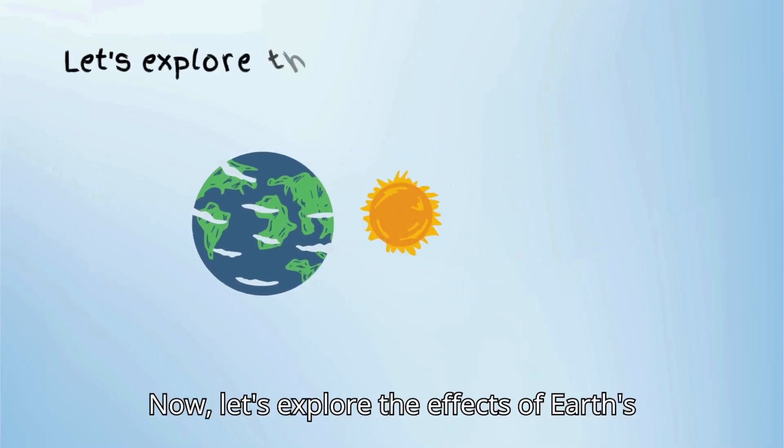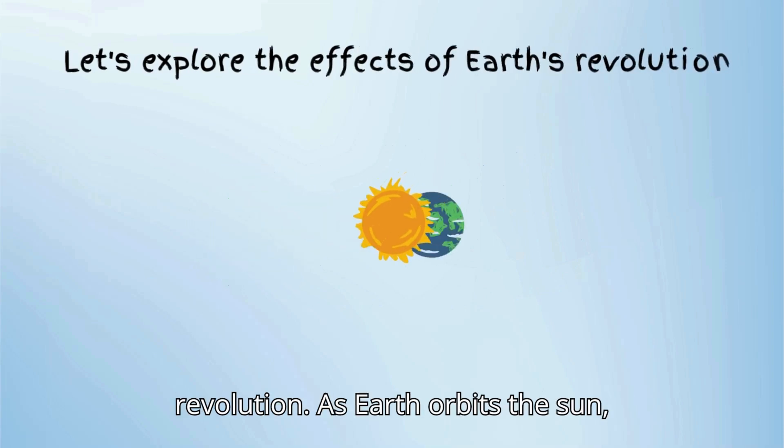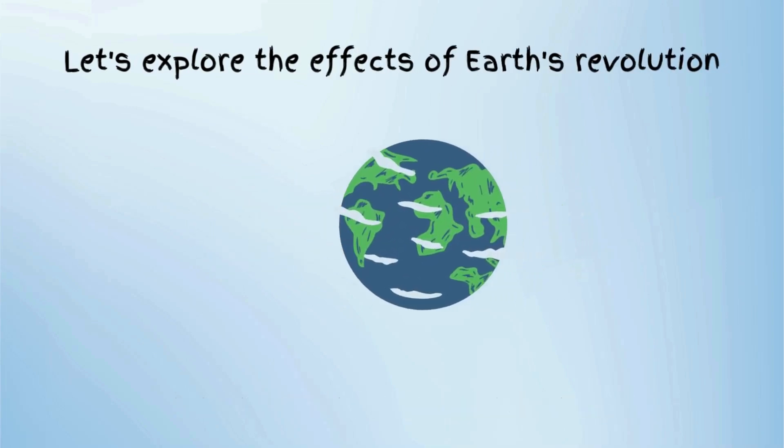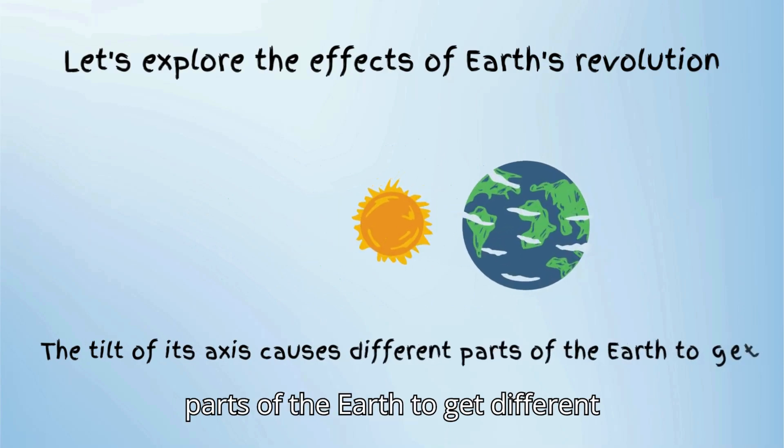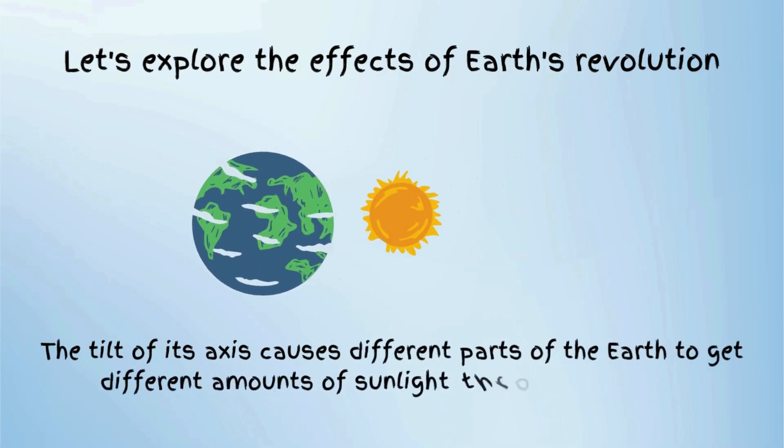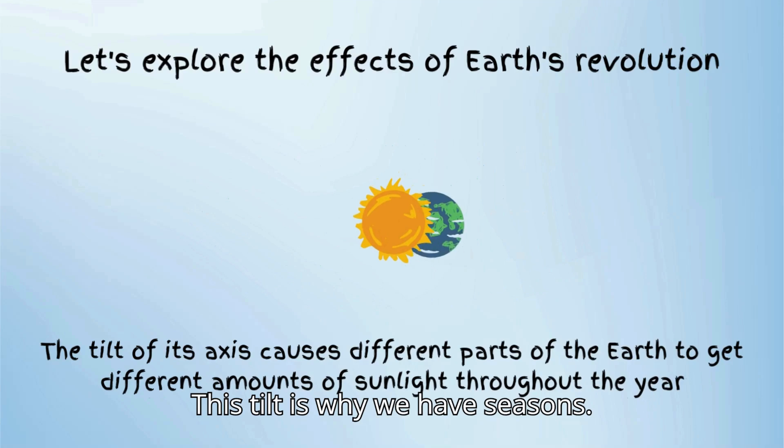Now, let's explore the effects of Earth's revolution. As Earth orbits the sun, the tilt of its axis causes different parts of the Earth to get different amounts of sunlight throughout the year. This tilt is why we have seasons.